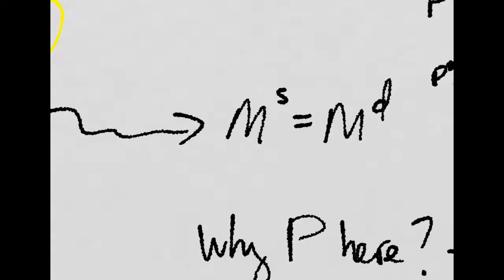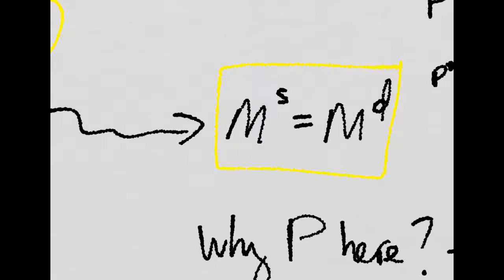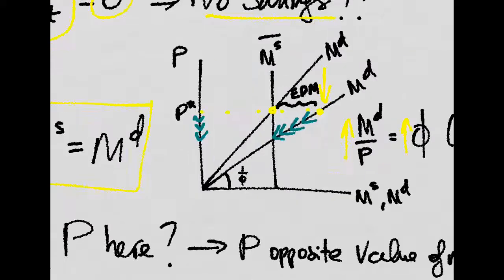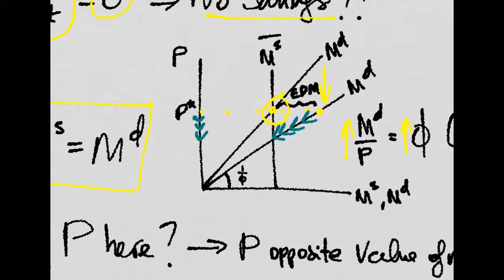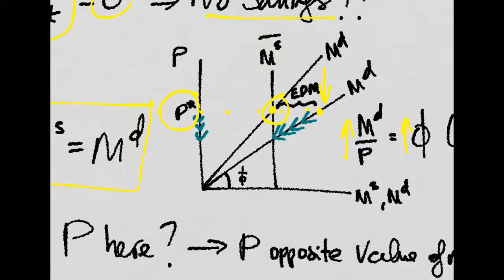At equilibrium, money supply is equal to money demand. If we plot it on a graph, money supply equals money demand at equilibrium, and that gives us an equilibrium price level.